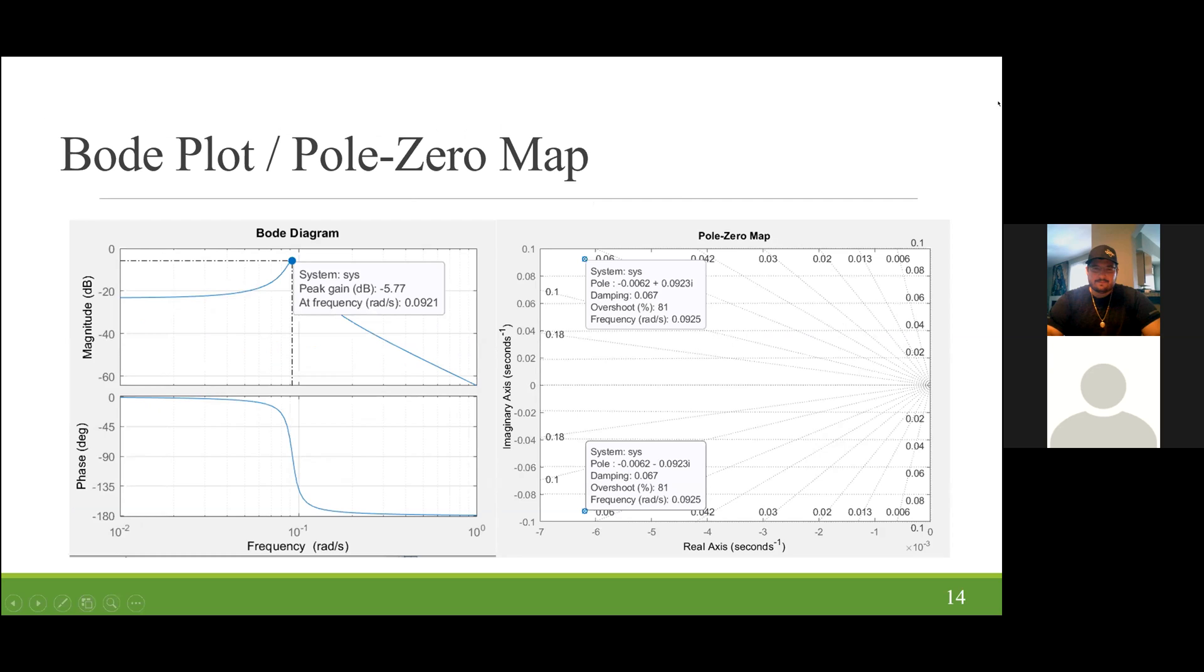Now that we have our open-loop step response, we go into our bode plot and pole zero map. From our bode plot, we have a peak gain at negative 5.77 decibels. On our pole zero map, we have two poles located at negative 0.006 plus or minus 0.09. And we have no zeros on the map, since there are no s values in our numerator of the transfer function. So we only have two poles and no zeros.